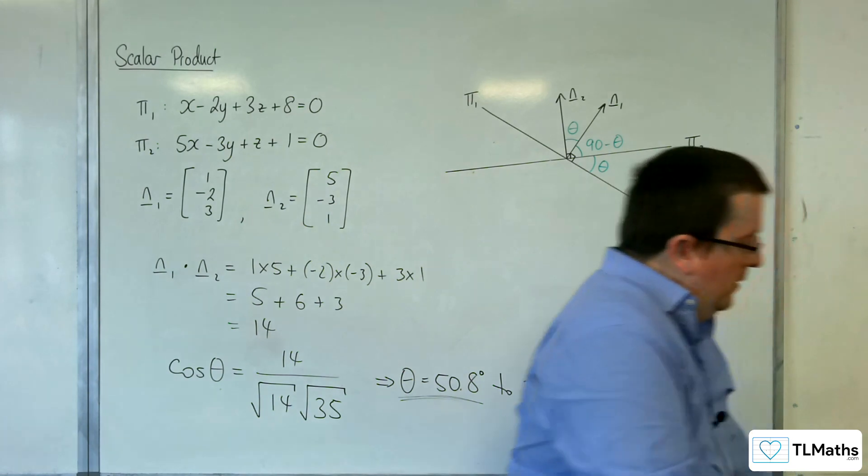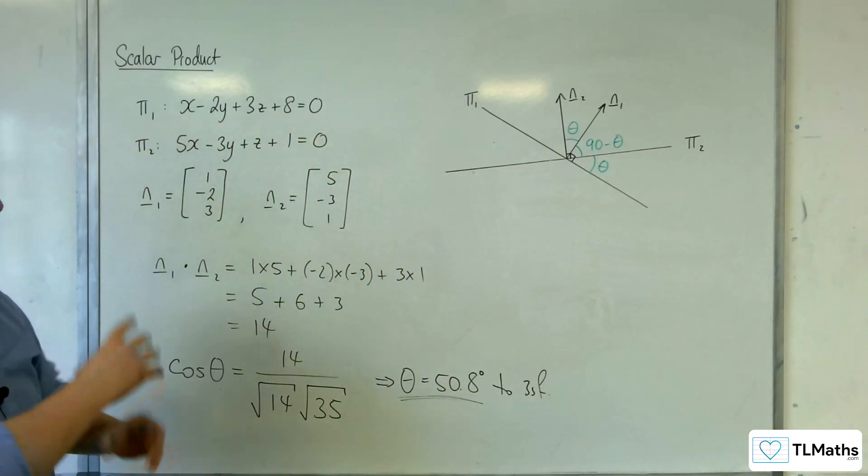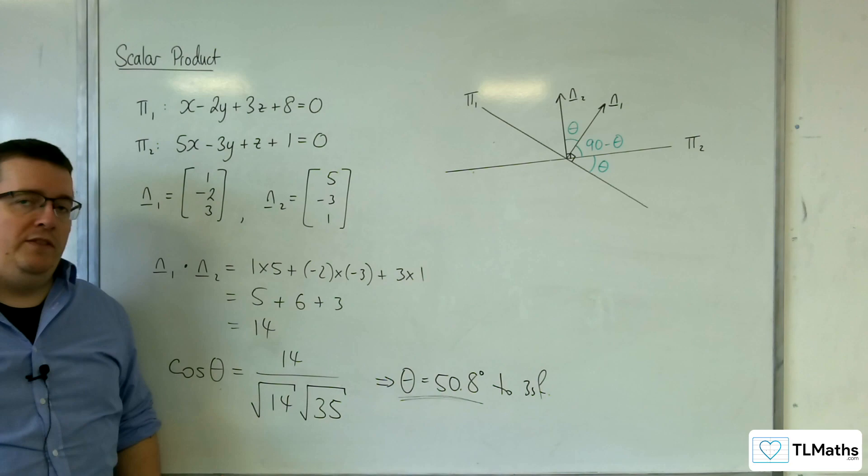OK, so finding the angle between two planes reduces to just finding the angle between the two normal vectors.